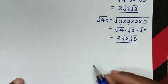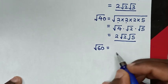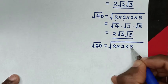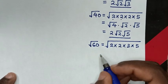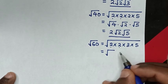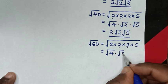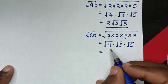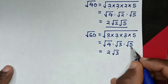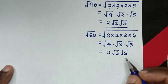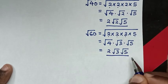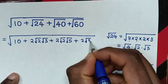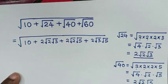Then plus square root of 60. Square root of 60 is equal to square root of 2 times 2, which is 4, times 3 which is 12, then times 5 which is 60. Then it will be equal to square root of 4, which is 2, times square root of 3 times square root of 5. So we substitute 2√3·√5 in place of √60.